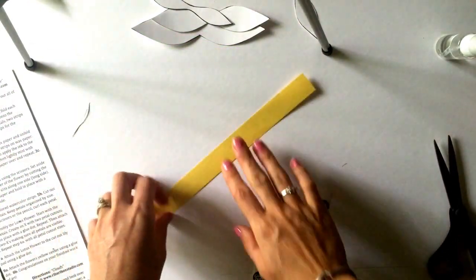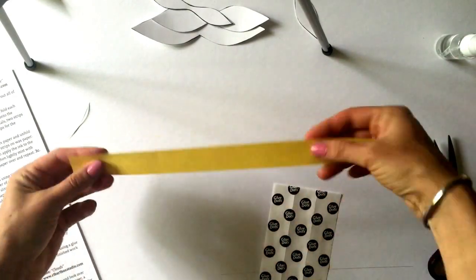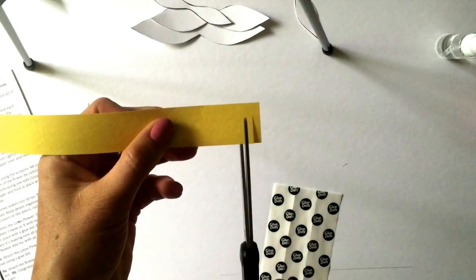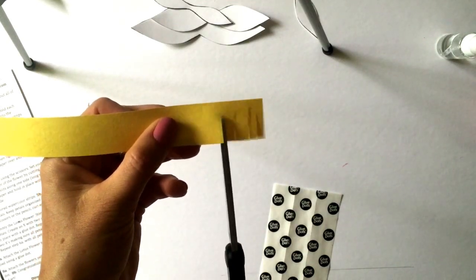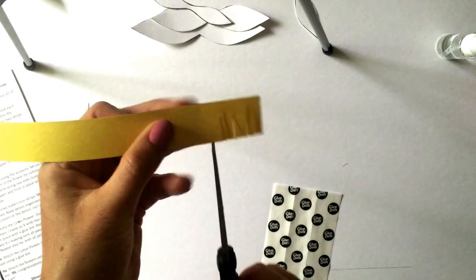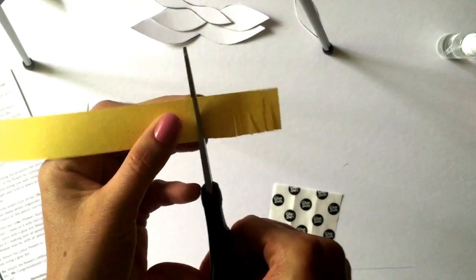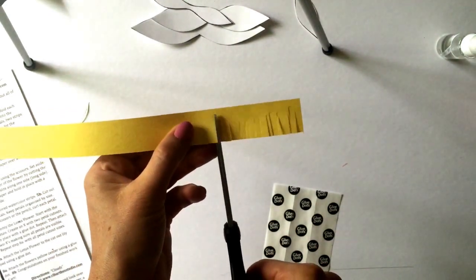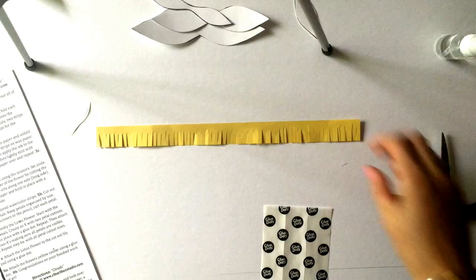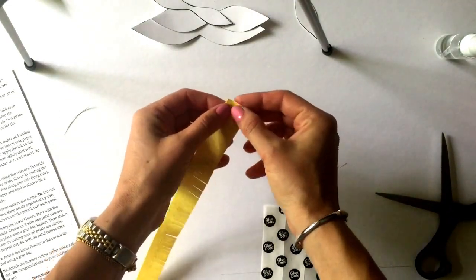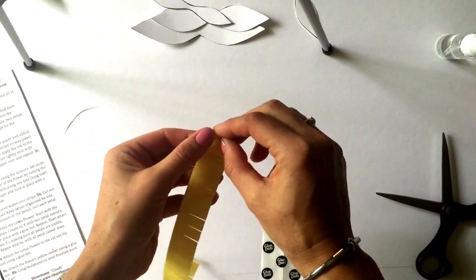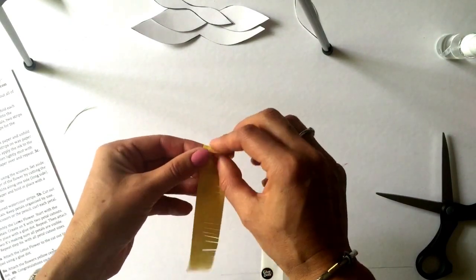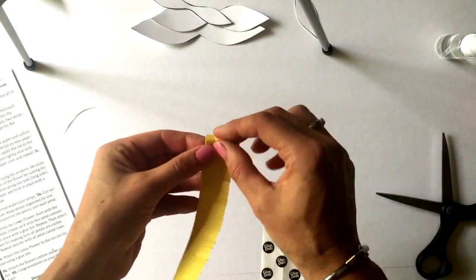Step 4B. Create the center of the flower by cutting the yellow paper. Cut slits along one side, the long side of the yellow paper. Step 4C. Roll the yellow paper and hold in place with a glue dot. Once it's held in place, set the center of your flower aside.